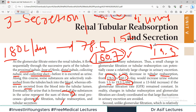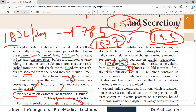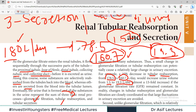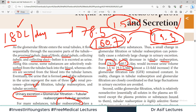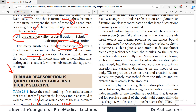Just because reabsorption capacity decreased, not GFR, urinary output went from 1.5 liters to 19.3 liters. In this condition you would be severely dehydrated. The body maintains GFR and reabsorption carefully. Even slight changes in reabsorption will change urinary volumes and body fluid volumes.